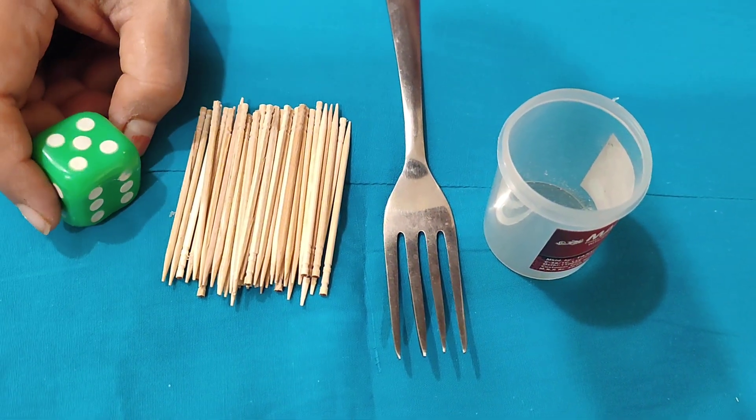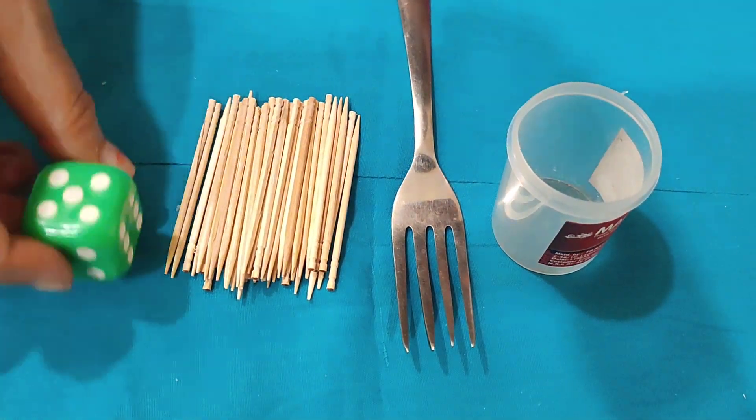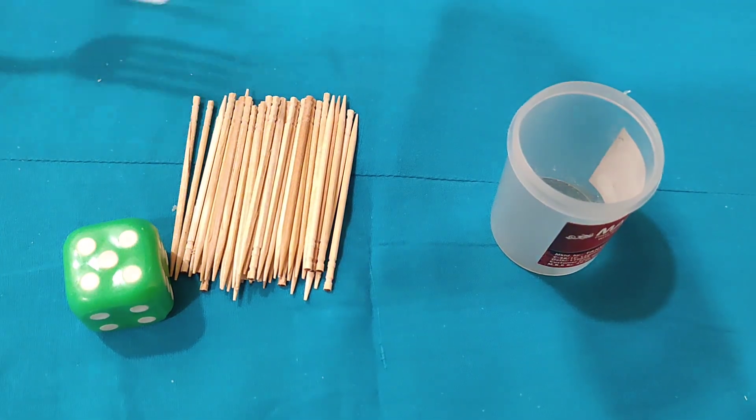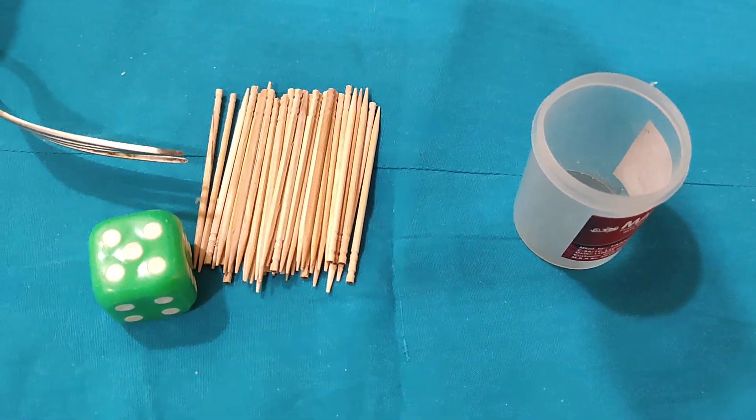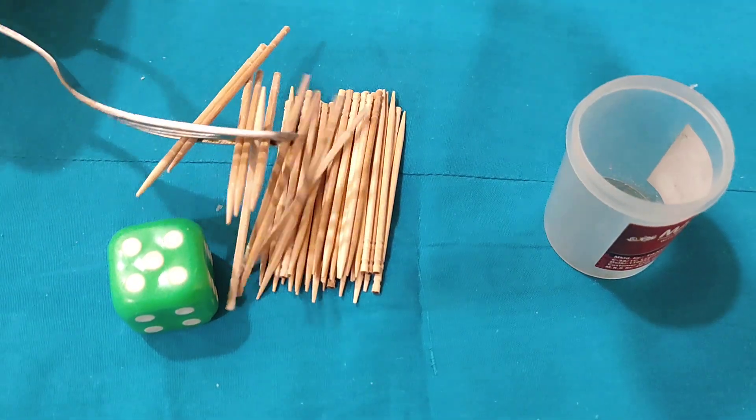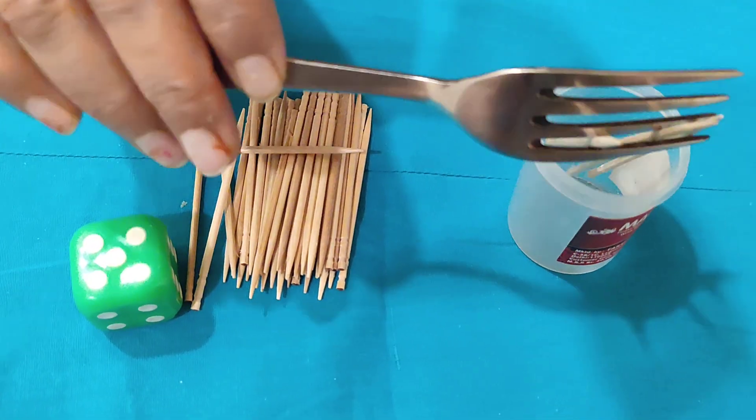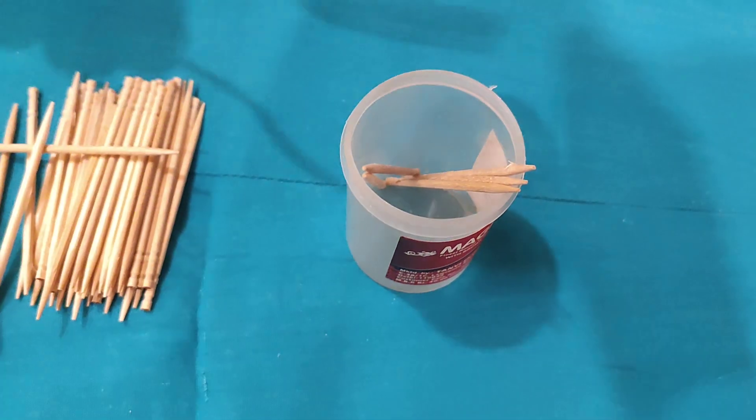First member will be given 30 seconds of time. You have to roll the dice. You can see that it is 5, so what do you have to do? We have to take 5 toothpicks. Look: 1, 2, 3, 4, 5. I have to put 5, you can see.